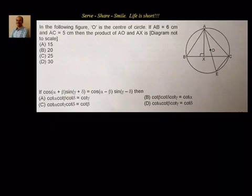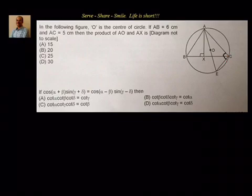We know AE is a diameter, which means the angle in a semicircle is a right angle. So we can put angle ACE equal to 90 degrees. Considering triangle AXB and triangle ACE, we already have 90 degrees.